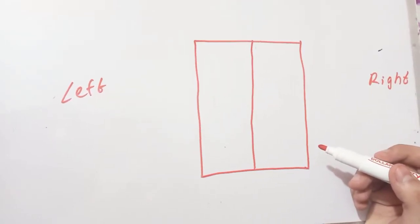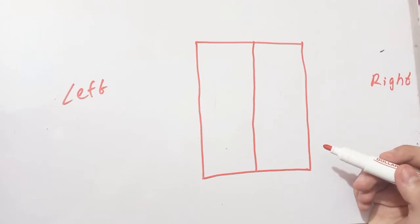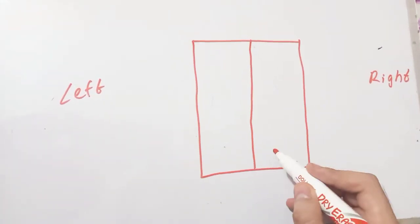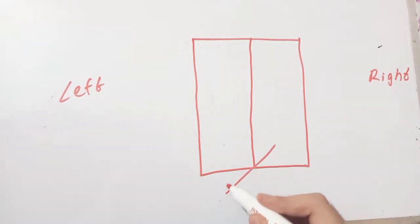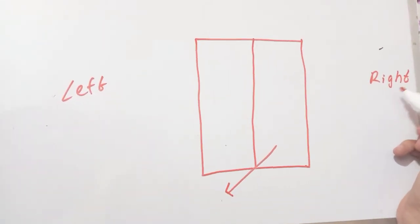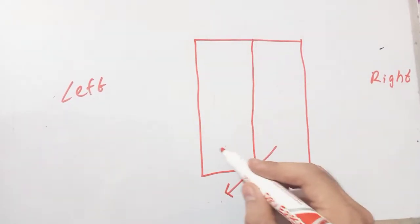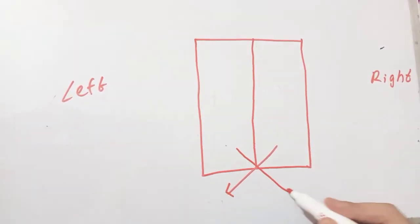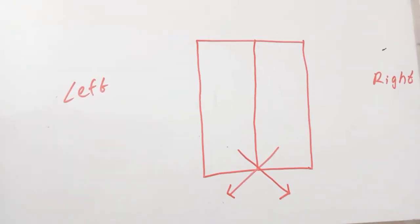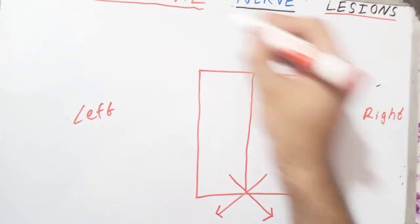The main muscle we are concerned with right now is the genioglossus muscle. Let's review the action of the genioglossus muscle. The genioglossus muscle of the right side, when it contracts unilaterally, pulls the tongue to the opposite side — meaning when the right side muscle contracts it pulls the tongue toward the left side. Let's now draw the hypoglossal nerve nucleus here.